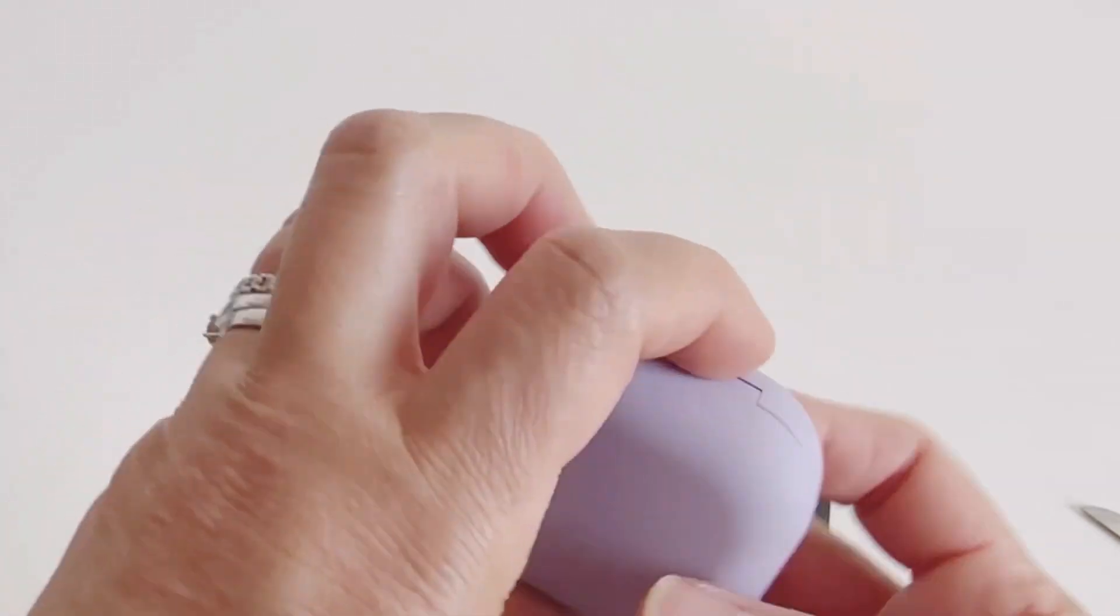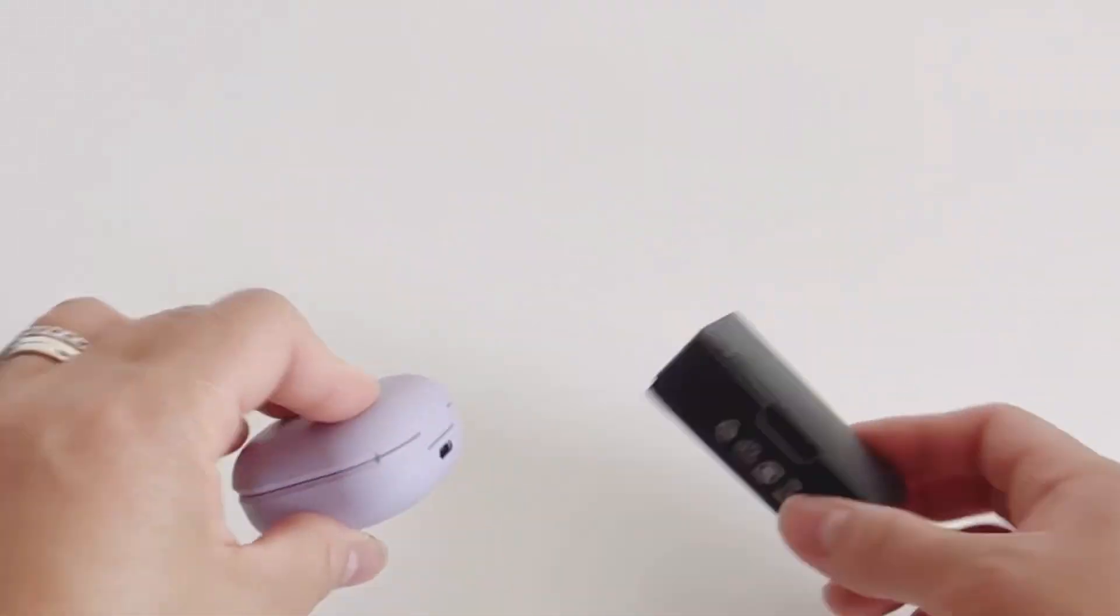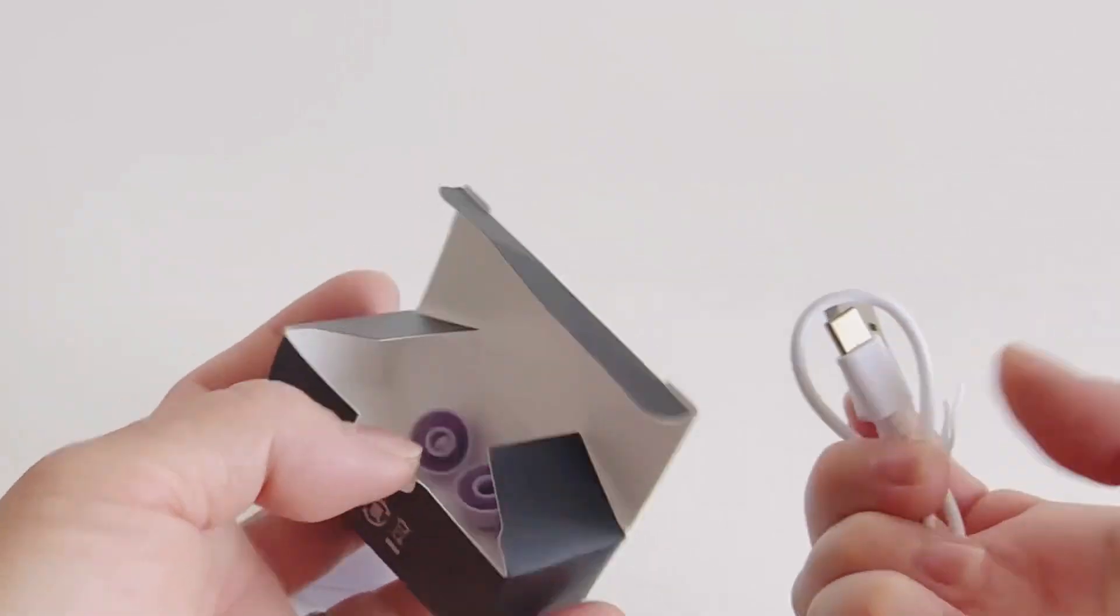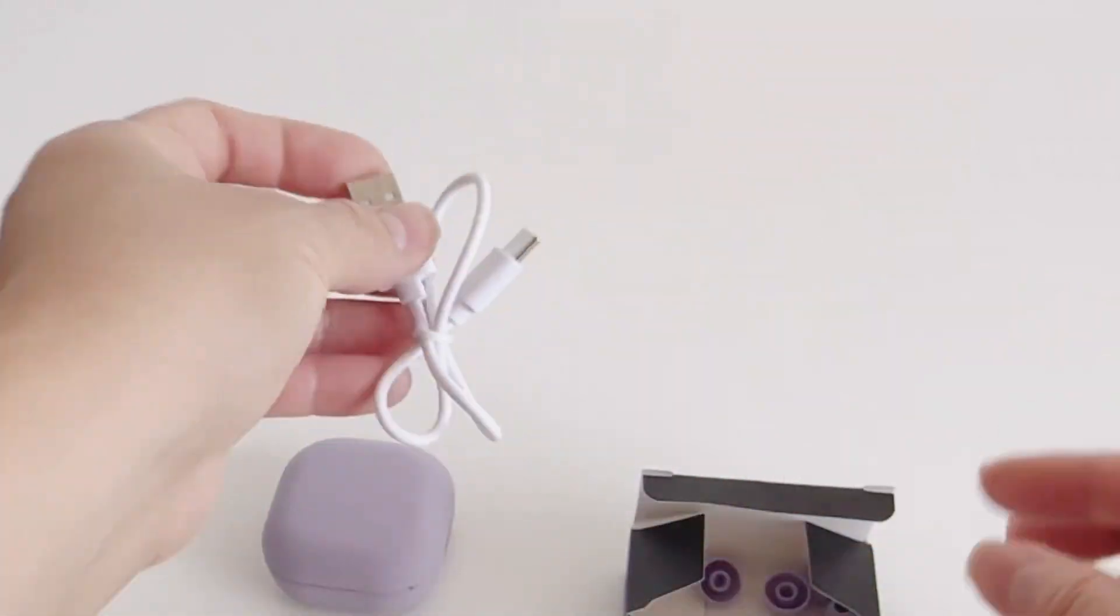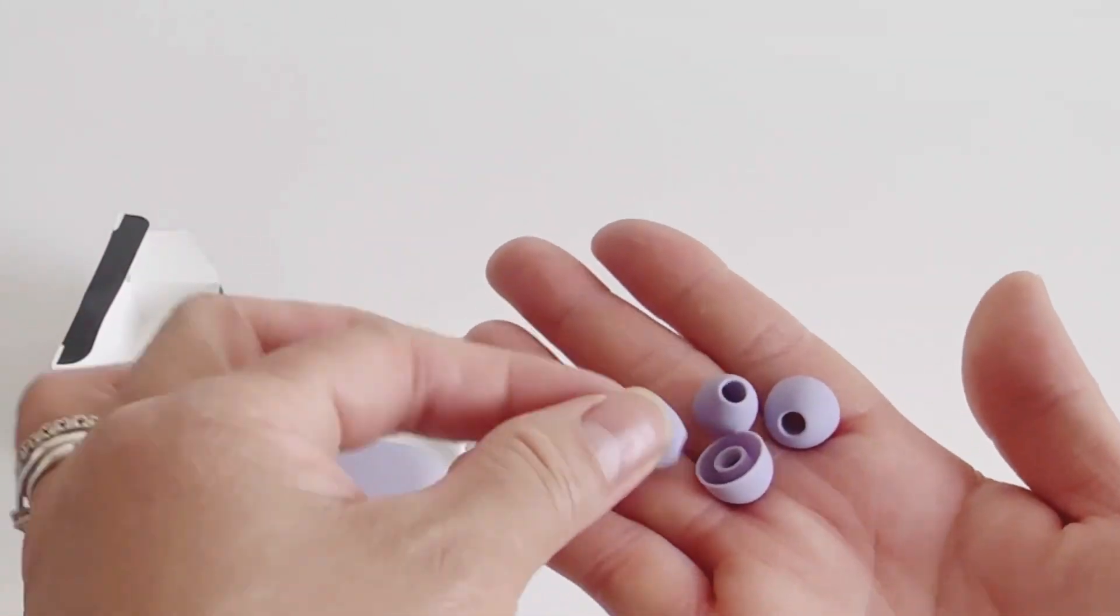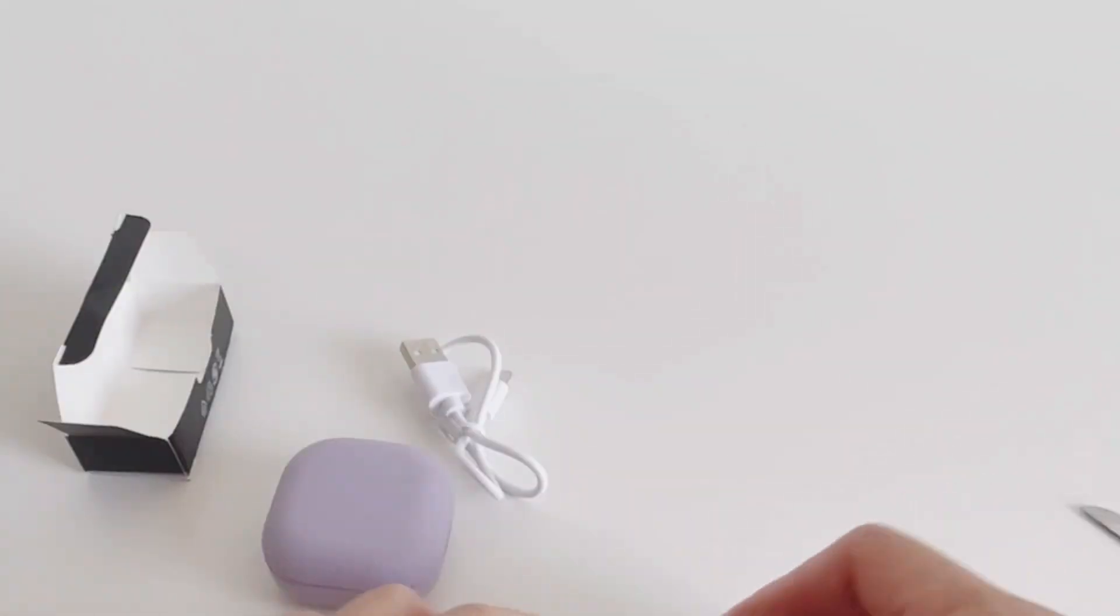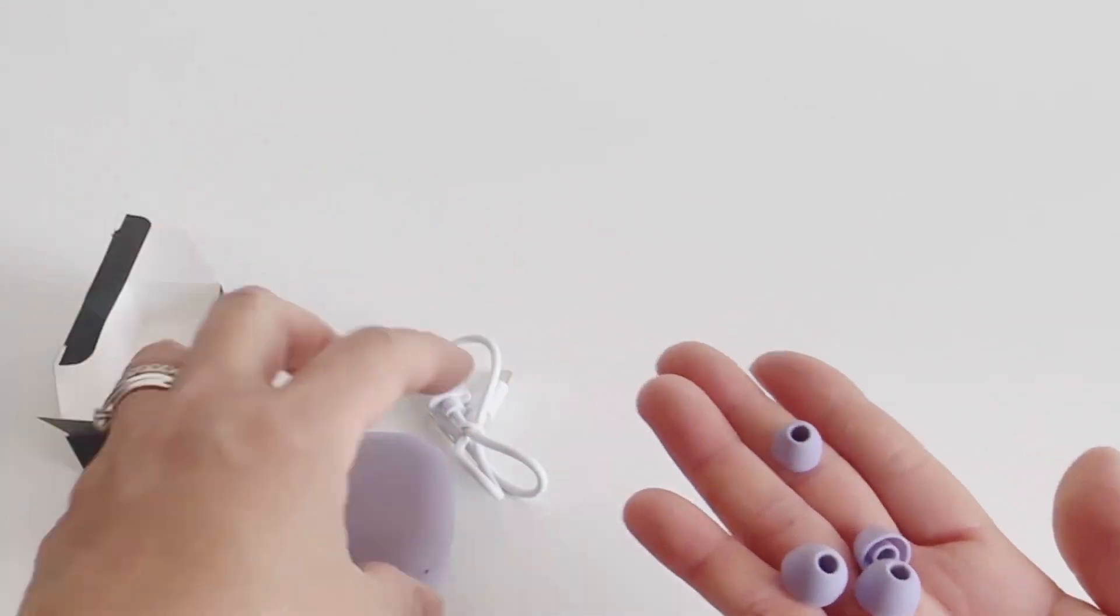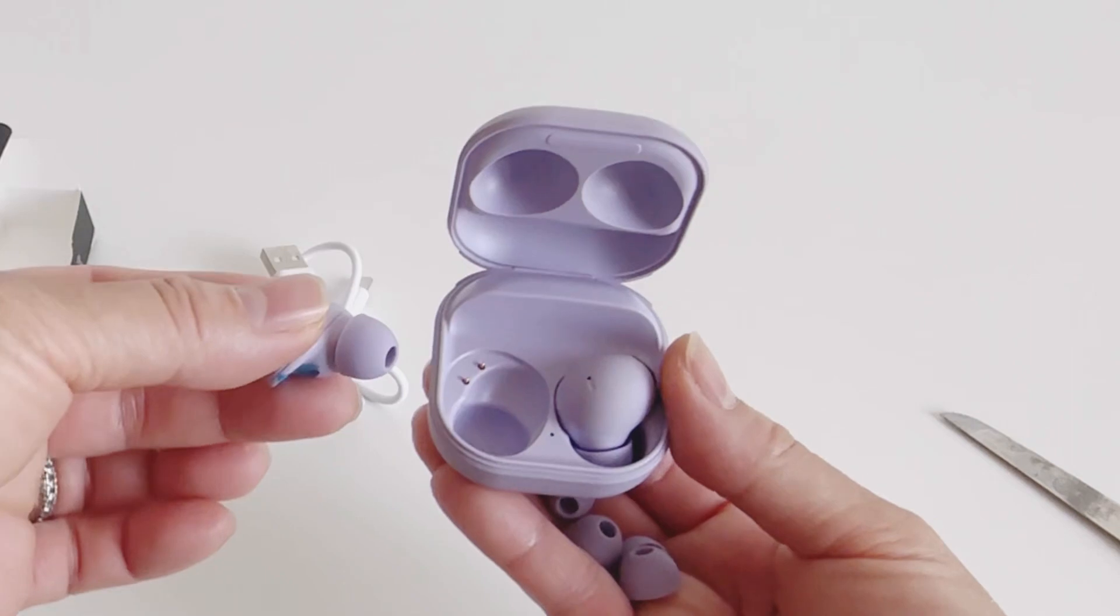So looks really nice and this is the charging area here, outlet or something, and this is the USB charger. Oh, they have extra silicone protection.